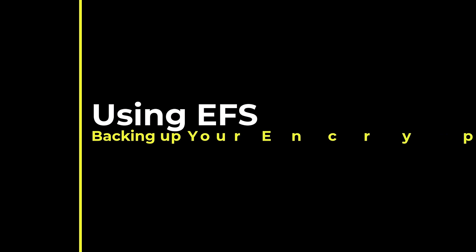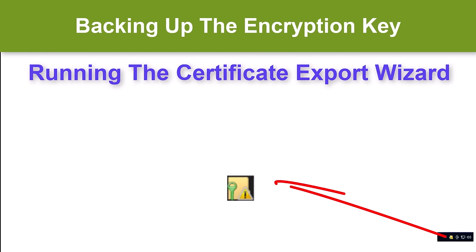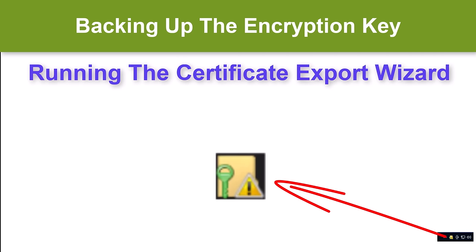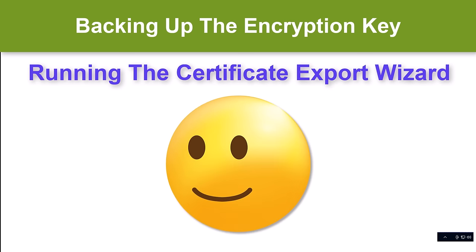To back up your encryption key, we will be using the certificate export wizard. The quickest way to run the wizard is to click on the icon shown here in the system tray. However, the icon may not be present, so I will cover an alternative method. We will assume that the icon is not there and run the wizard using another method.